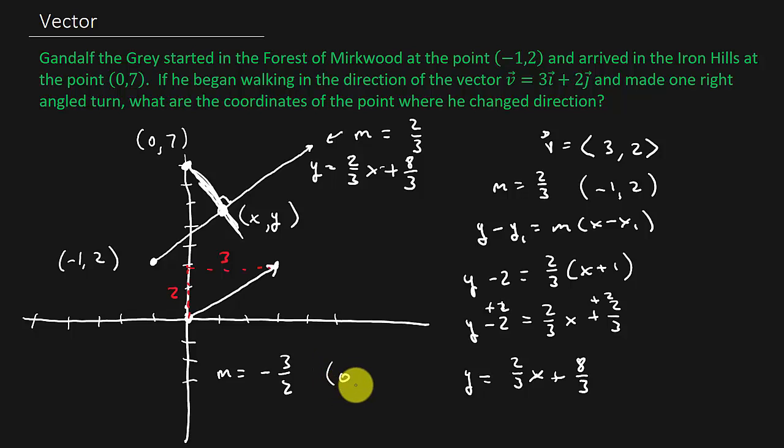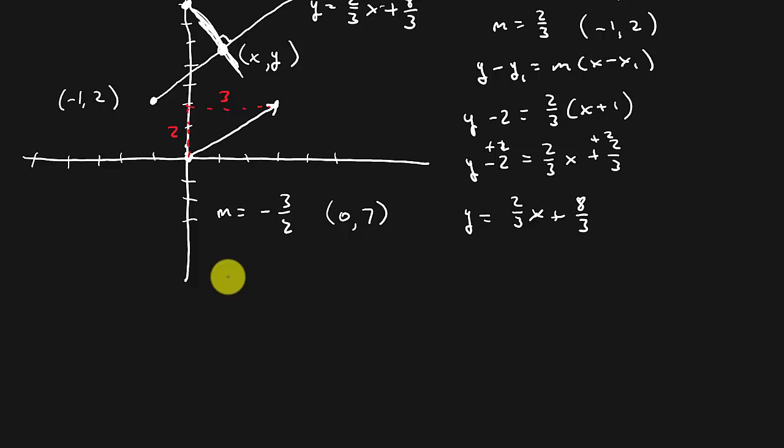And we have a point on the line (0, 7). So we can actually use y = mx + b here, where m is the slope and b is the y-intercept. Remember, your y-intercept is in the form (0, b). And so we get y = (-3/2)x + 7.